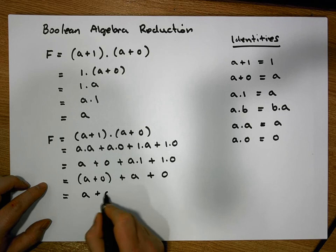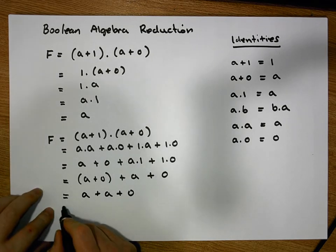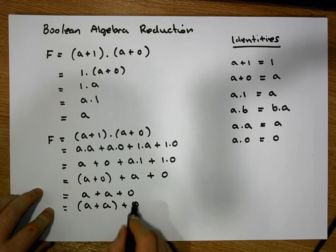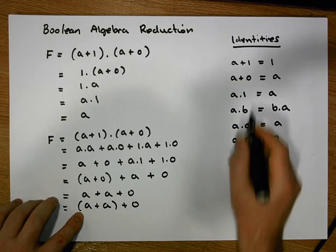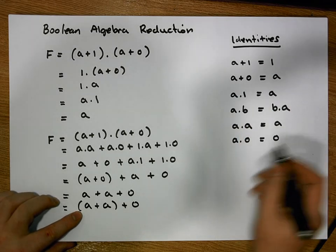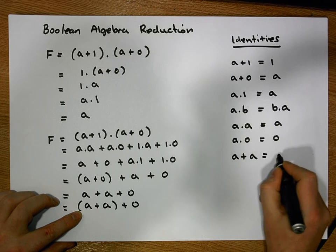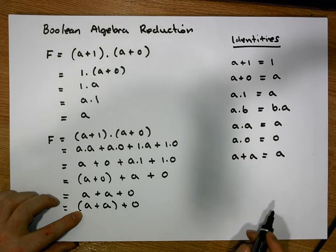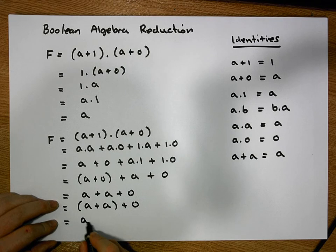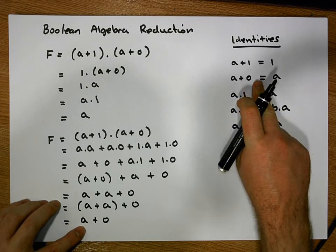So now we have a OR'd with a OR'd with 0. We can associate the two a's together to get a OR'd with a, OR'd with 0. From our previous identities, a OR'd with a is simply equal to a — this is the Idempotent Law for OR. So this reduces to a OR'd with 0, and a OR'd with 0 was equal to a.